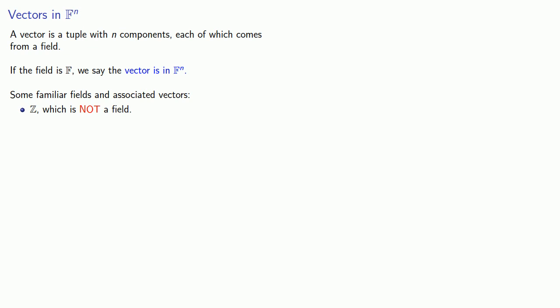Q, on the other hand, as we've just shown, is a field. So I can take a tuple with n components, all of which are rational numbers, and form a vector in Q^n. Similarly, R, the set of real numbers, is going to give rise to vectors in R^n. And C, the set of complex numbers, will give us vectors in C^n.